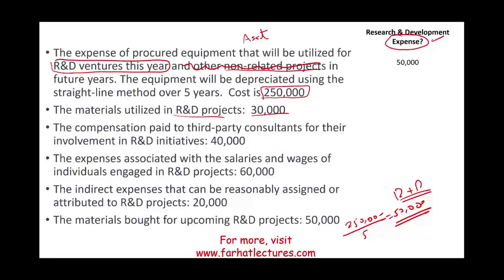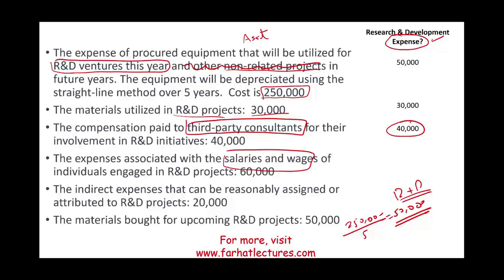Material used in the R&D project — $30,000 — is expensed as R&D. Compensation paid to a third-party consultant of $40,000 involved in the R&D project is also expensed. Whether it's a third party or an insider, if they are working on an R&D project, we expense their cost as R&D expense.